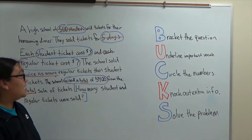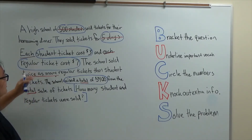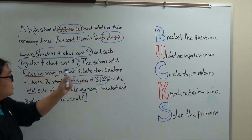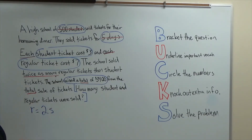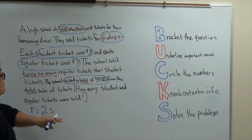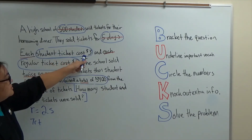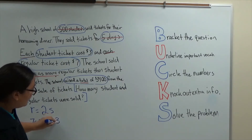So if I take the information that I have and write it out into equations, I know that my regular tickets are sold twice as many as student tickets, so I can write R equals two S, where R represents regular and S represents students. And I know together they raised three thousand four hundred dollars. I know my regular tickets cost seven, so seven R plus three S equals three thousand four hundred.